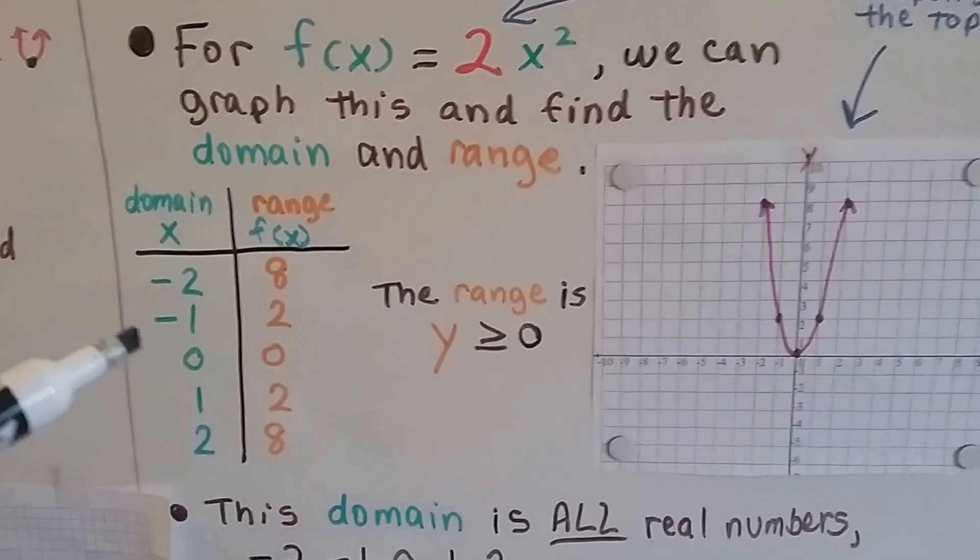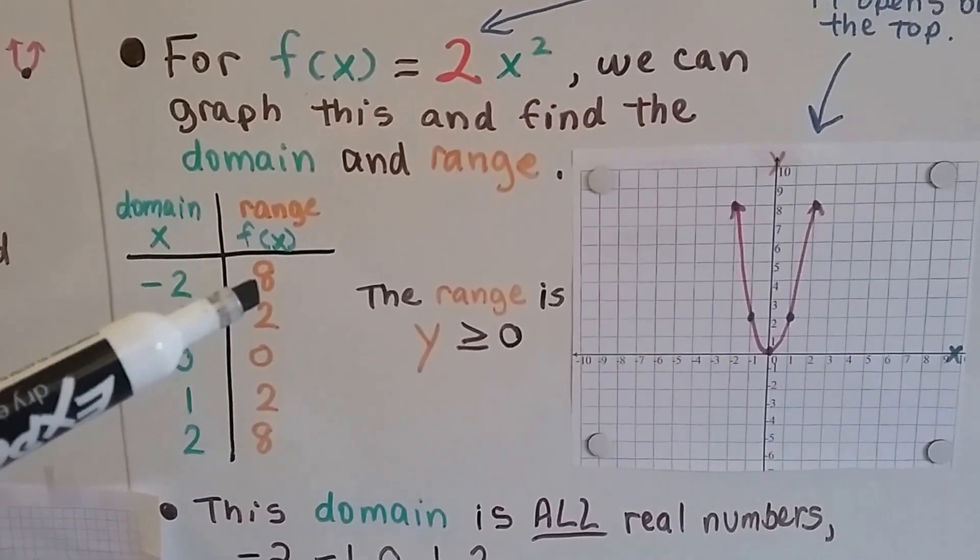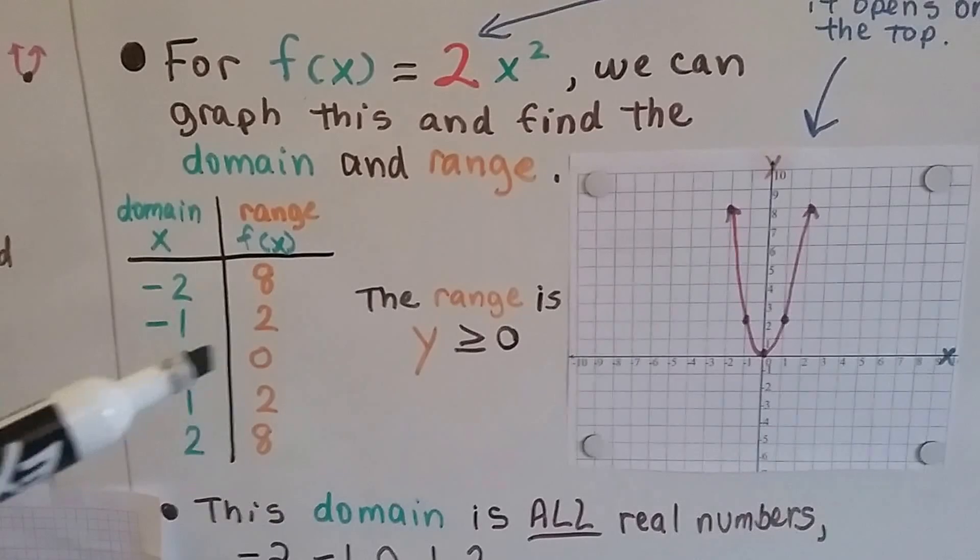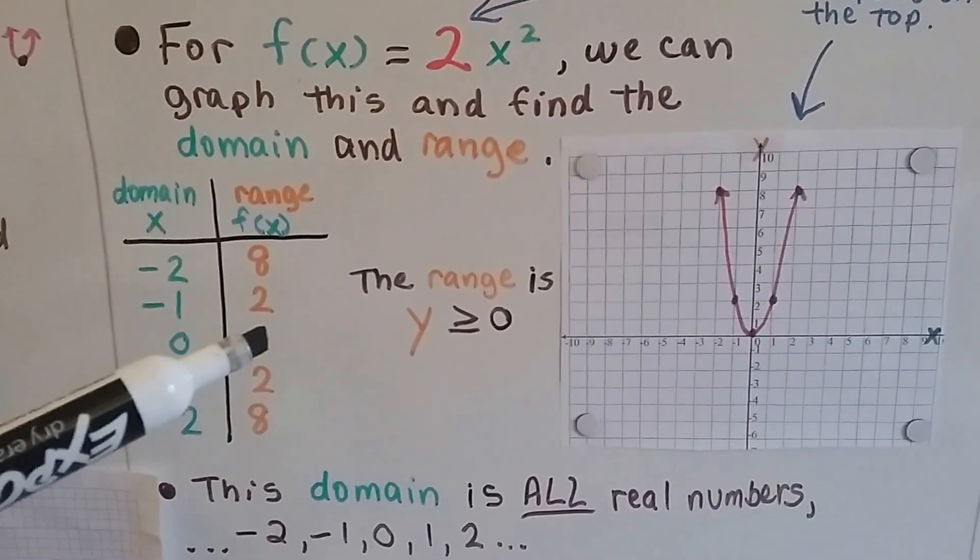And we can find the domain and the range. So, here's our table. If we've got a negative 2, then the y value, or the function of x, is going to be an 8. If we've got a negative 1, it'll be a 2. If we have a 0, it's going to be a 0.